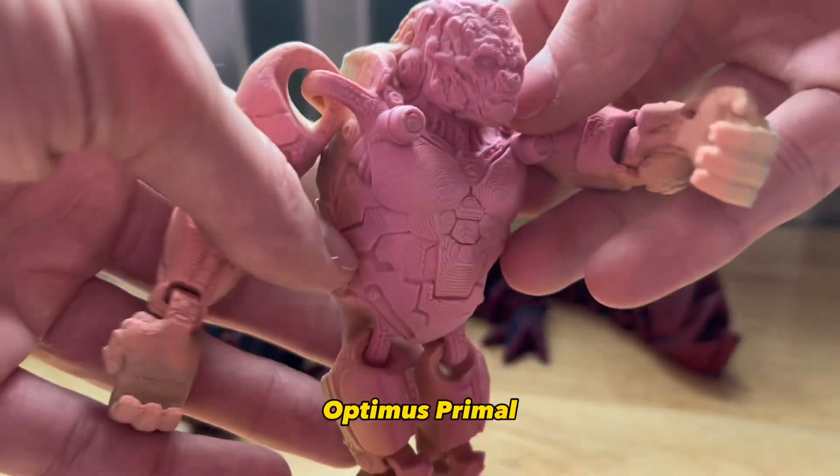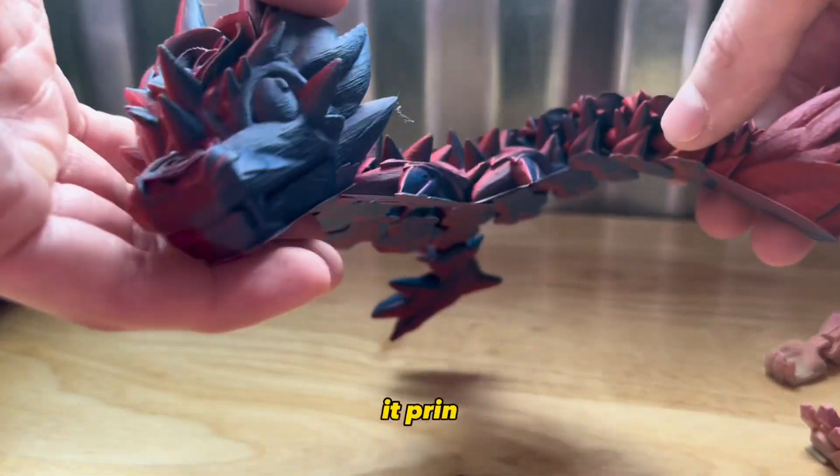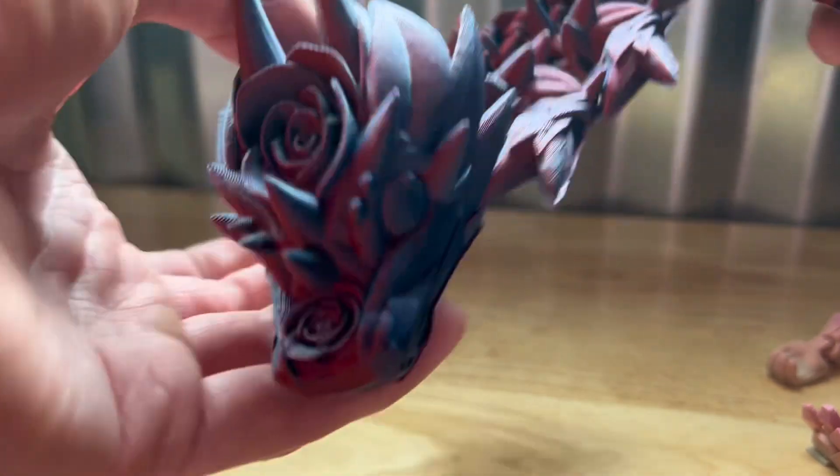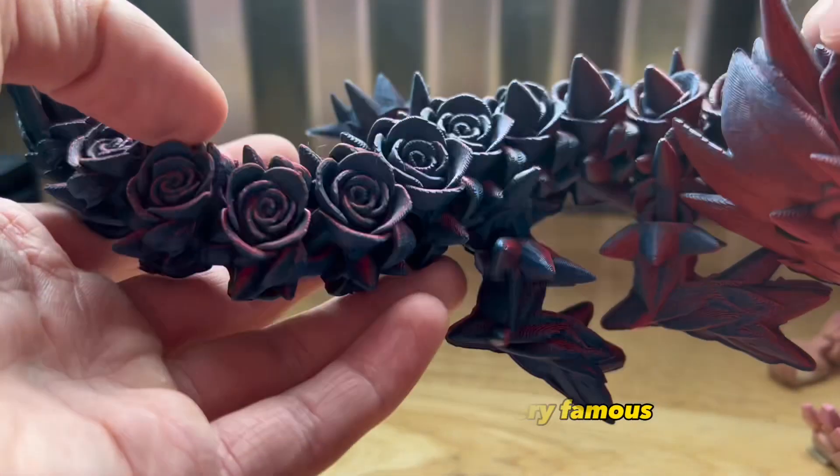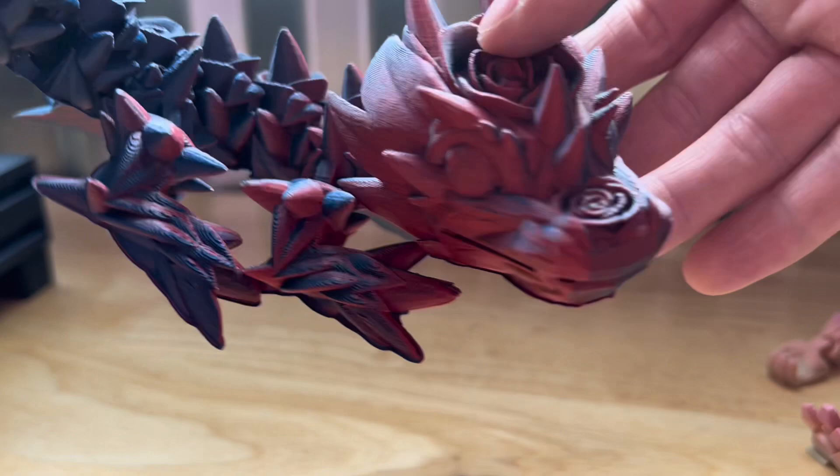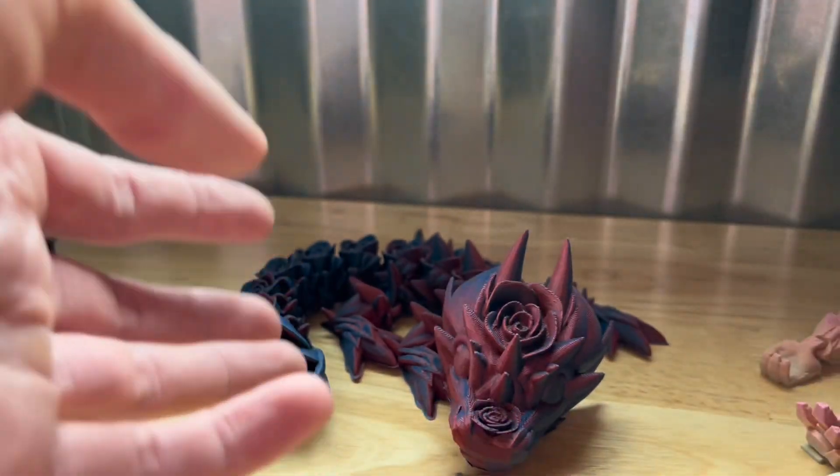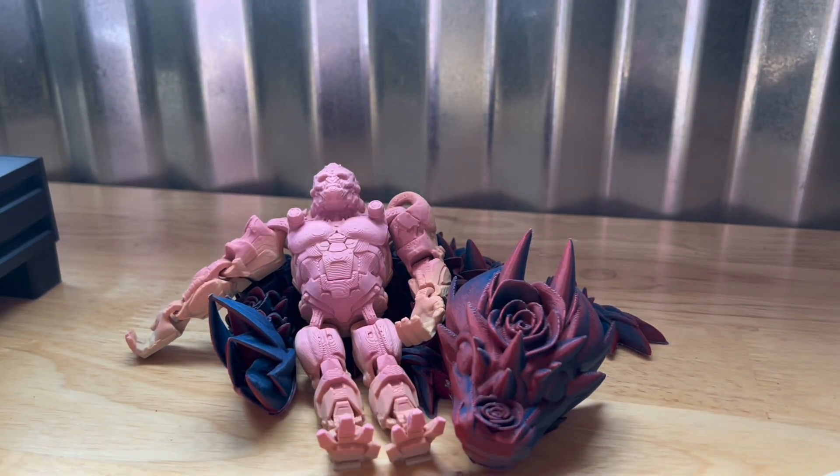Another thing is it prints crystal dragons and Cinderwing's designs very beautifully and very quick. Now I'm only pointing this out because her dragons are very famous and well known. These dragons used to take my Ender like 24 hours to print. On the Neptune 4 it printed this in seven hours, and that is fast, especially for a bed slinger.